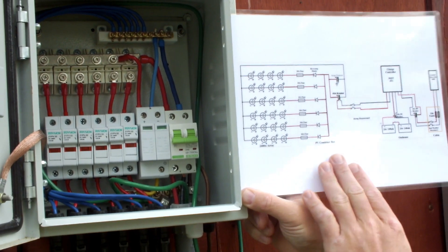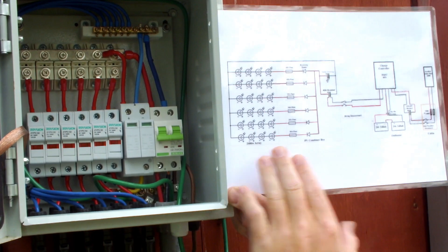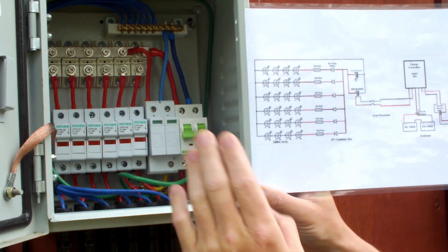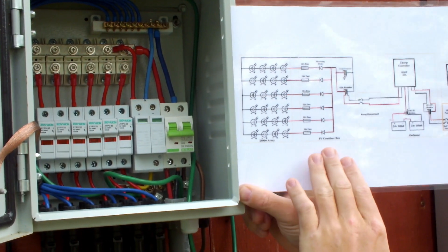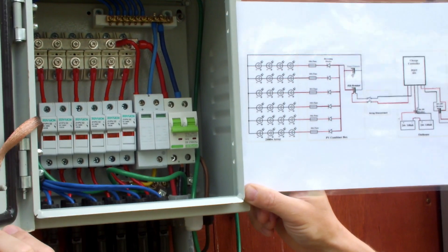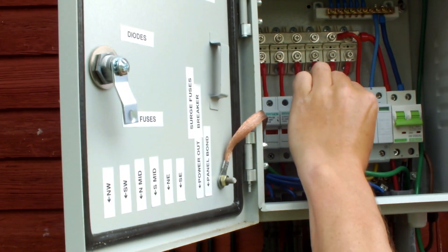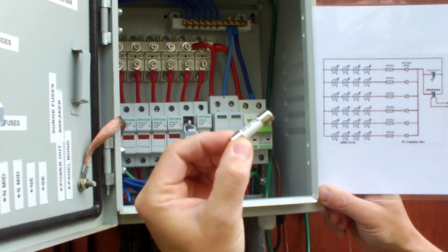Here we're in the PV combiner box, and on the print you can see we have 10 amp fuses on each string. There are 5.5 amp strings. Then we have reverse blocking diodes, then we have a surge protector and a 40 amp breaker. Everything's labeled on the door for the most part. These fuses simply pop out. Pretty simple.